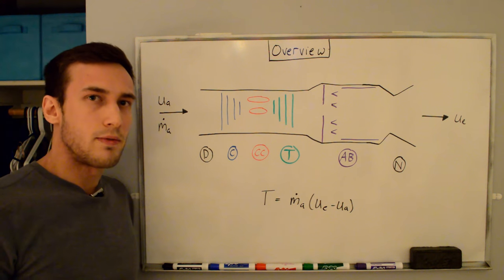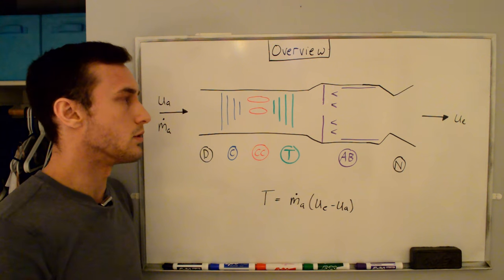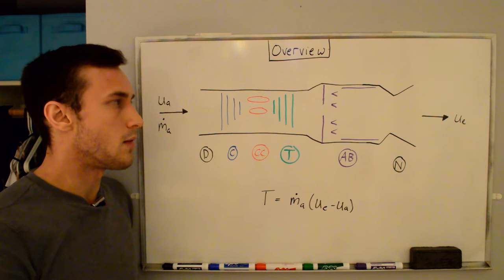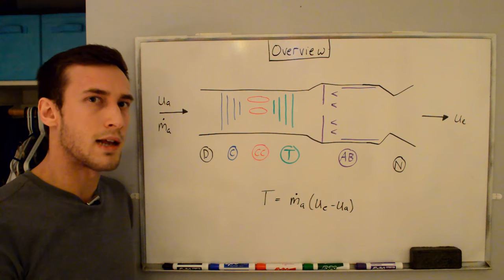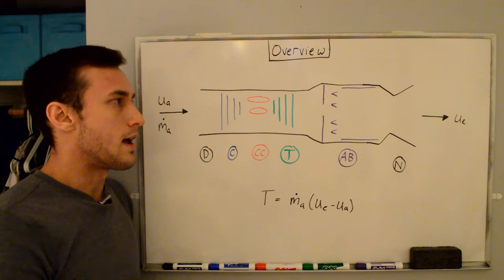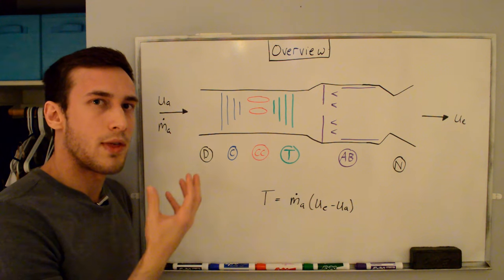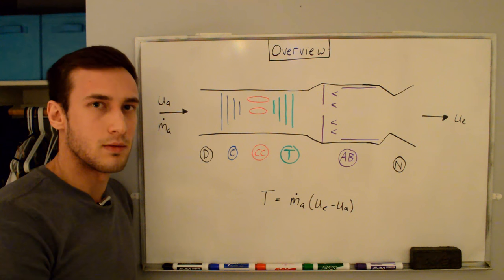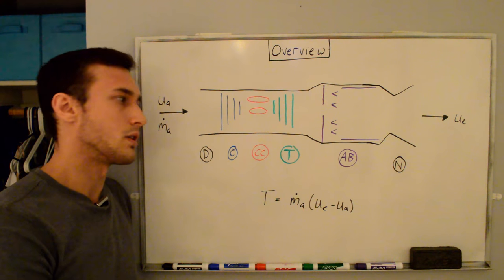Because engines operate fuel lean due to temperature limitations of materials used in the turbine, there's excess air left over that wasn't used for combustion, and we can take advantage of this excess air by adding some more fuel in the afterburner, igniting it and extracting more energy, and with that energy, we can now increase the kinetic energy of the exhaust gases, which increases the velocity of the exhaust gases, which thus increases the thrust.